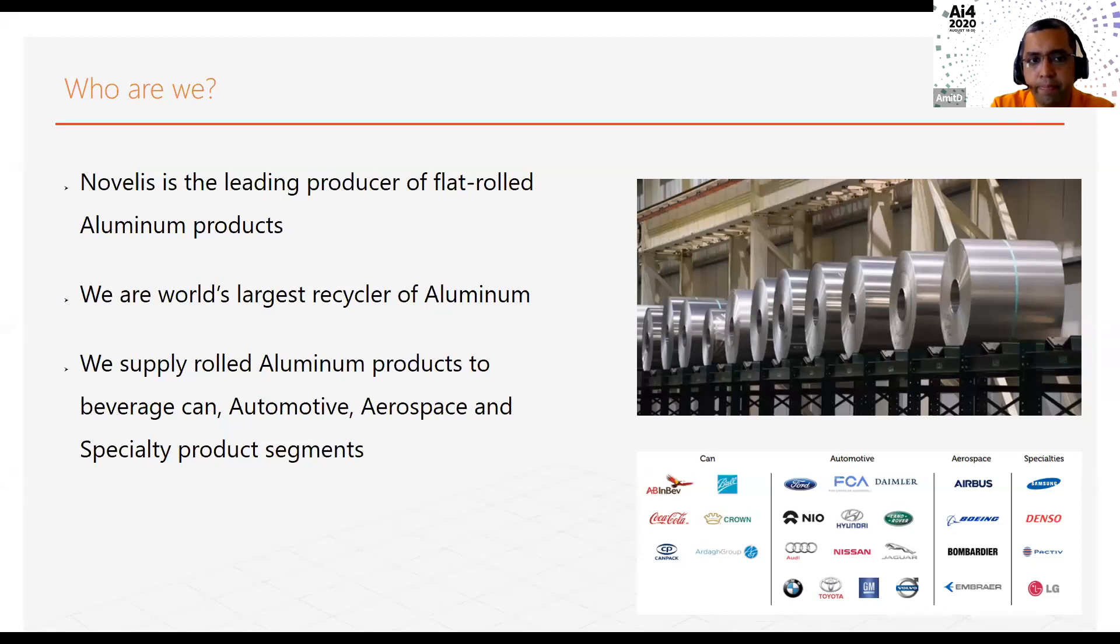Novelis is a leading producer of flat rolled aluminum products. What you see on the right hand side top is our end product that goes to our customers. We are the world's largest recycler of aluminum. We supply rolled aluminum products to four main segments: Can, automotive, aerospace, and specialty products. At the bottom, you see our top customers.